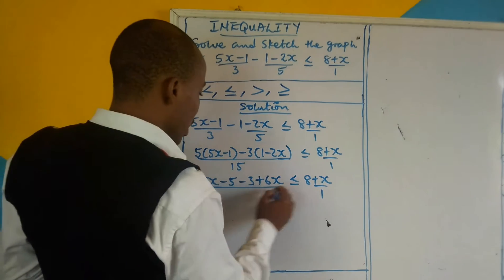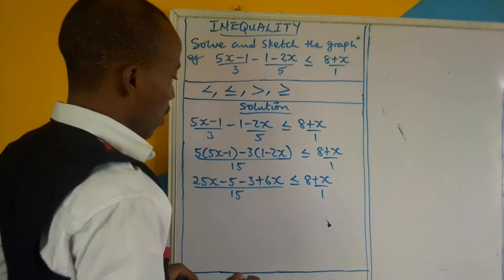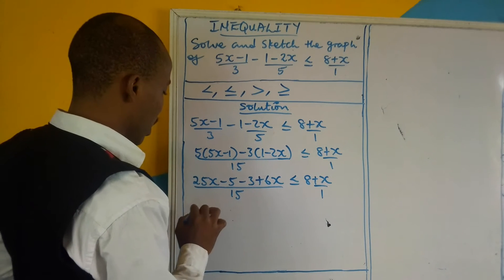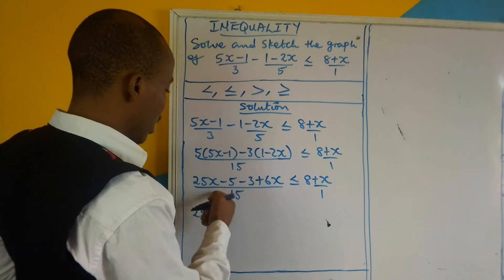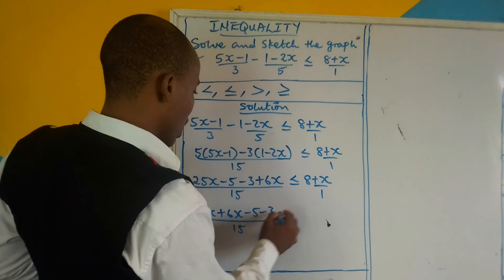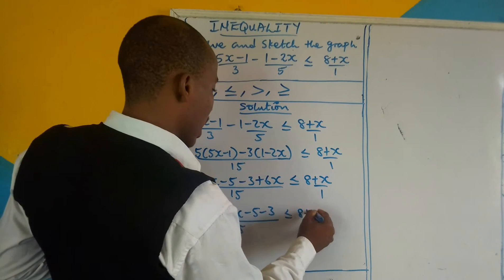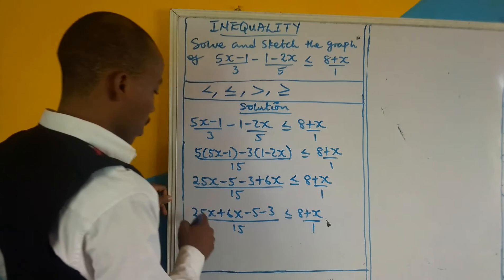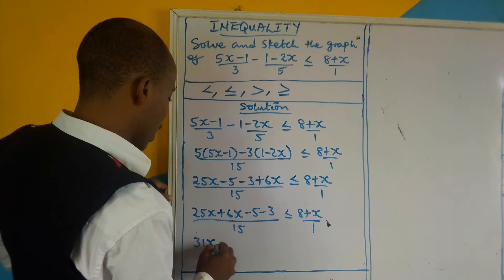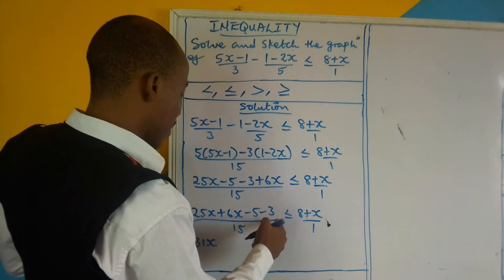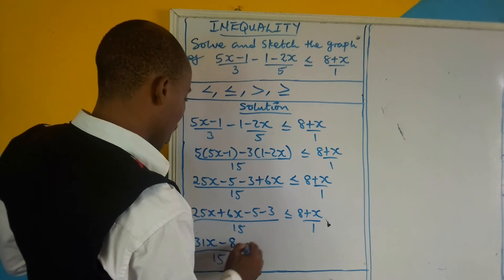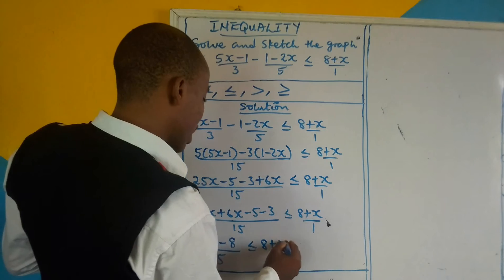And remember that all this is under 15. Now let's combine like terms. We have 25x, and we bring 6x here — plus 6x — minus 5 minus 3 over 15, is less than or equal to 8 plus x over 1. 25x plus 6x gives us 31x. Minus 5 minus 3 gives us negative 8. So 31x minus 8 over 15 is less than or equal to 8 plus x over 1.